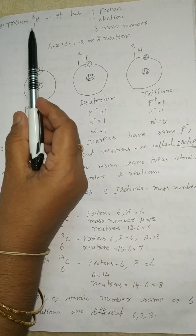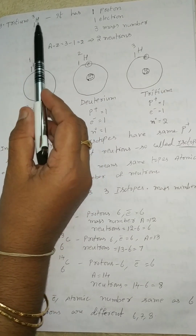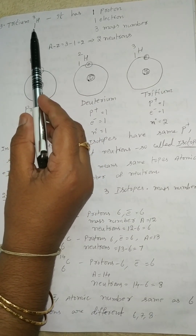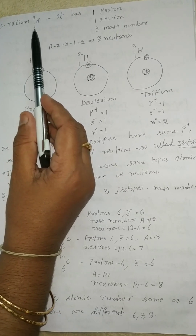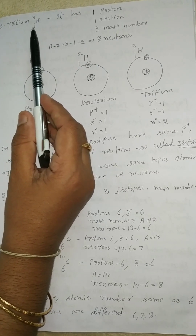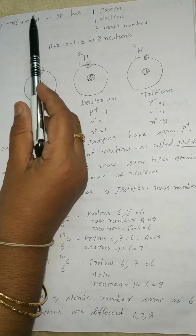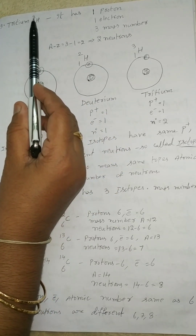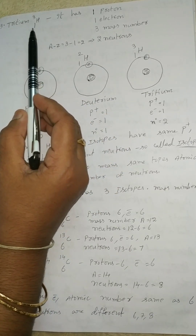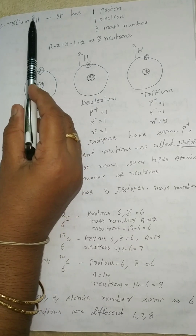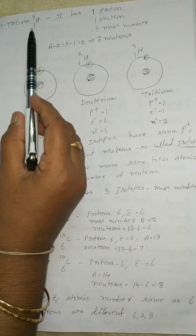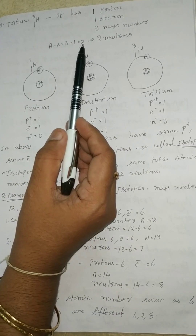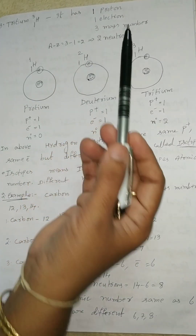Third one, tritium, 1H3. In tritium, atomic number is 1, one proton, one electron, and mass number is 3. Neutrons equal to A minus Z — mass number minus atomic number — so 3 minus 1 equals 2. So, 2 neutrons.